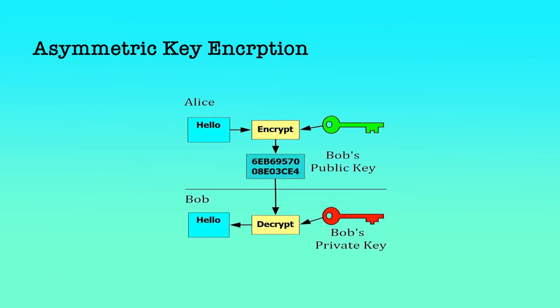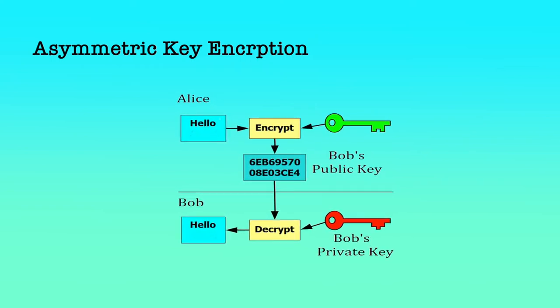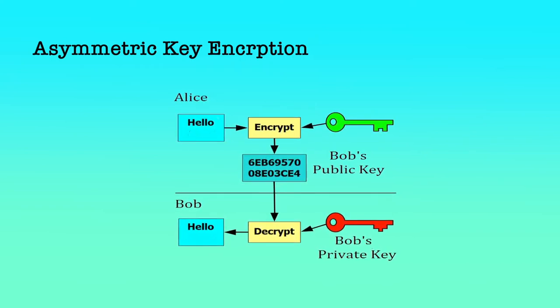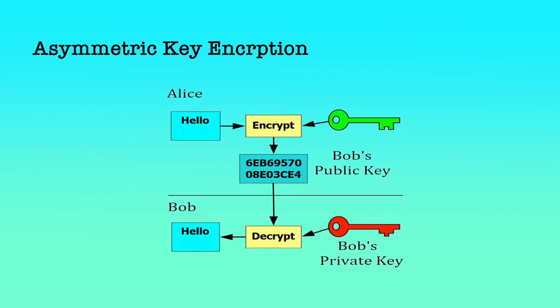If Alice wants to send a secret message to Bob, Alice will use Bob's public key, which is known to everyone, to encrypt the message and convert it to ciphertext, and send it to Bob over a public medium such as the internet. Alice is sure that only Bob can decrypt this message due to certain mathematical properties: the message encrypted by any user's public key can be decrypted using that user's private key only. So the encrypted message received by Bob can be decrypted to plain text by using Bob's private key only.